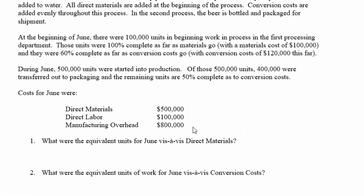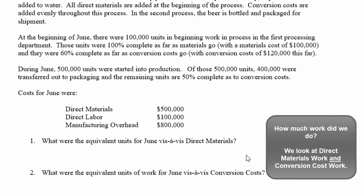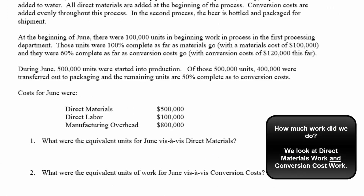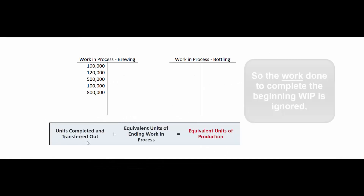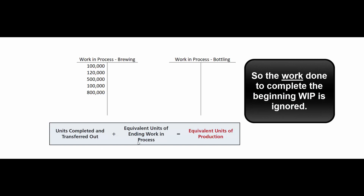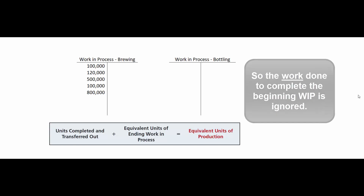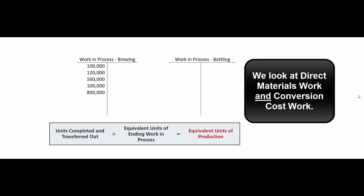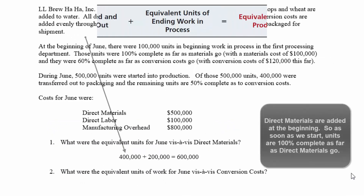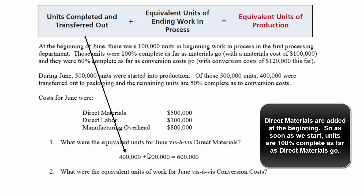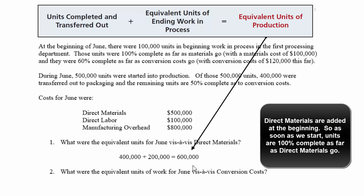The first thing the problem asks about is equivalent units for materials and for conversion costs. The formula is simply units transferred out plus units remaining in ending inventory. So: units completed and transferred out plus equivalent units worth of work in ending inventory gives us total equivalent units of production. We transferred out 400,000 units. The 200,000 units in ending WIP are 100% complete for materials — once we start on them there are no more materials to add — so our equivalent units for materials is 600,000.